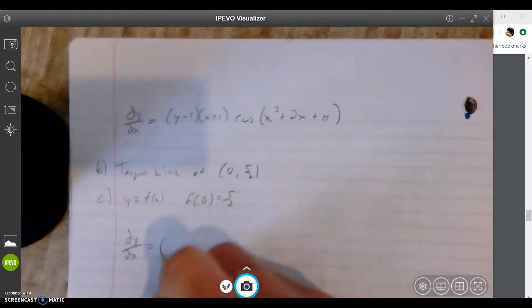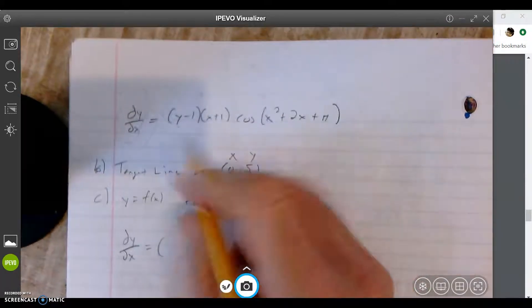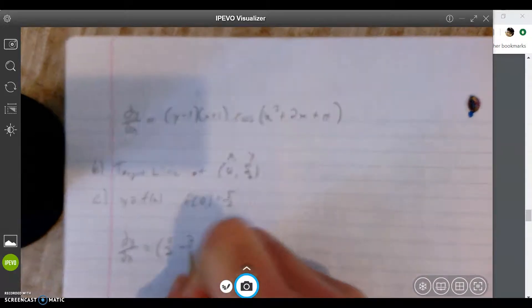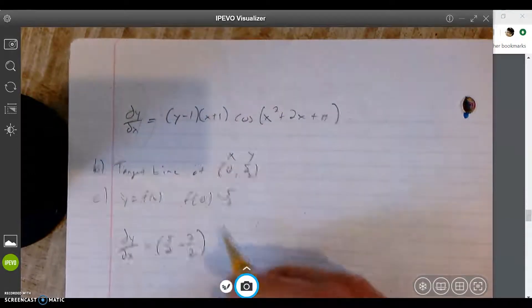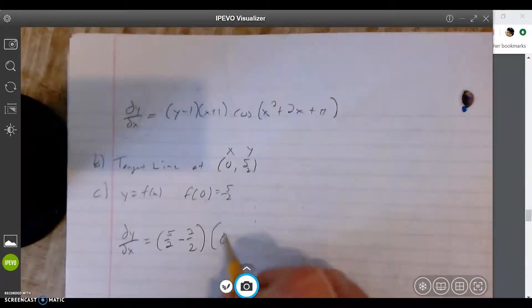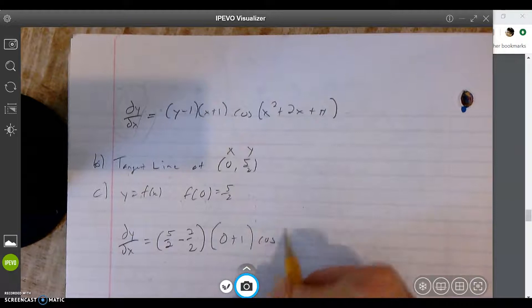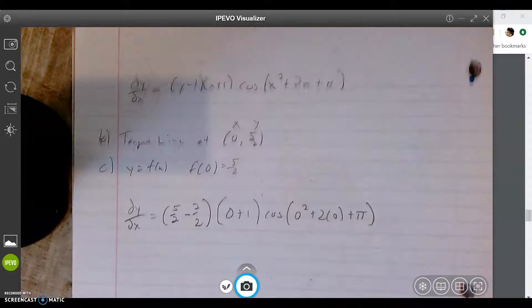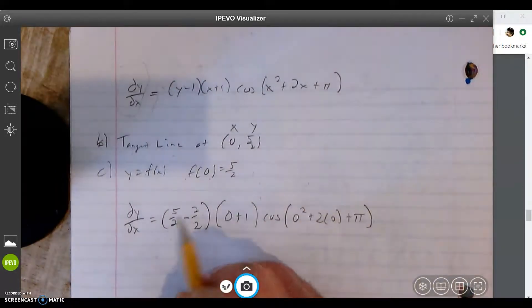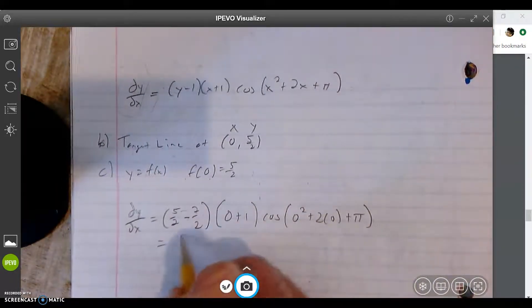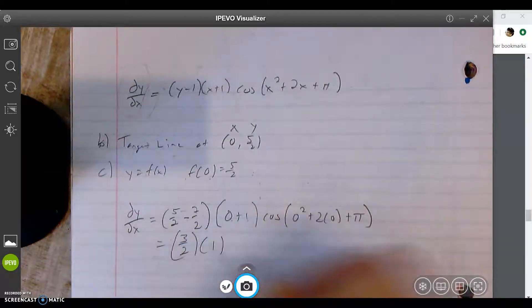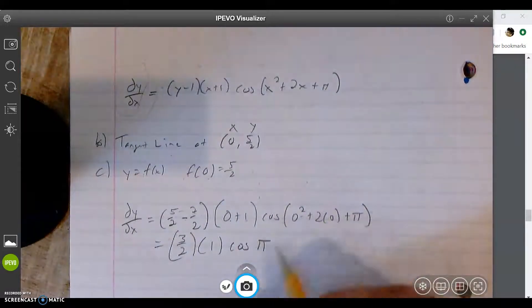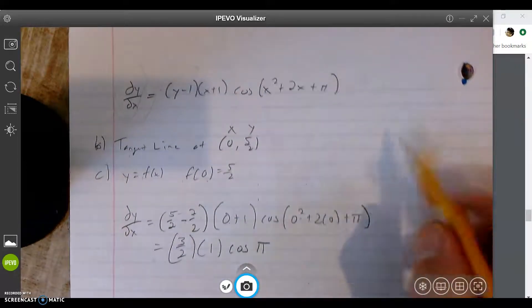dy/dx equals - this is x, this is y. So y is going to go here: 5/2 - 1. I'm going to put 2/2 here for 1, this will keep the same denominator. x is 0, then cos(0² + 2(0) + π). Now I'm going to get my slope. 5/2 - 2/2 is 3/2, this is 1, this is cos(π). 0 + 0 + π is π. Cosine of π - what the hell is that?